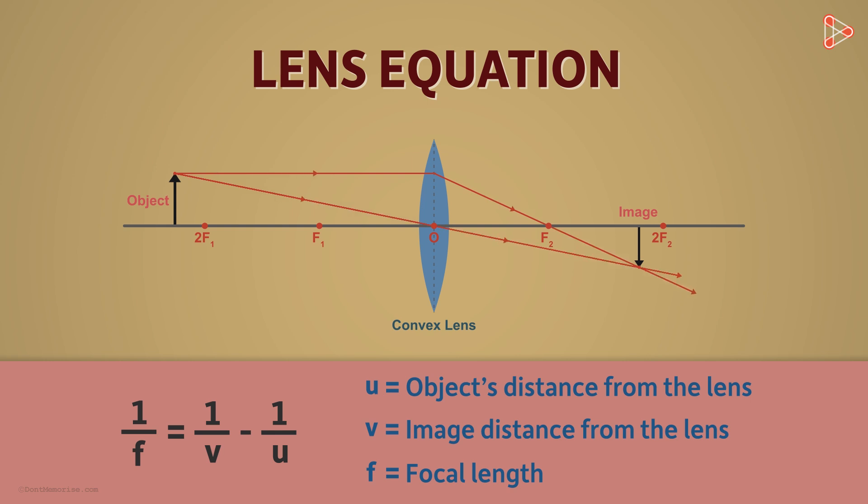To understand this, let's consider a case for a convex lens where object is kept beyond 2F1. What will be F here? It is the distance between the optical centre O and the principal focus of the lens. This distance will be equal to F. And this distance will be U and this will be V.